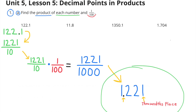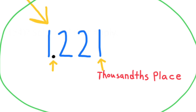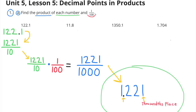Find the product of each number and one-hundredth. Finding the product means we're going to multiply. One hundred twenty-two and one-tenth can be written as one thousand two hundred twenty-one-tenths. One thousand two hundred twenty-one-tenths times one-hundredth equals one thousand two hundred twenty-one-thousandths. The number ends in the thousandths place, so the decimal point goes between the ones place and the tenths place. The final product is one and two hundred twenty-one-thousandths.